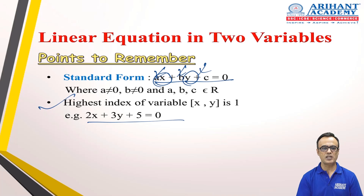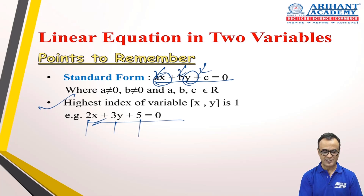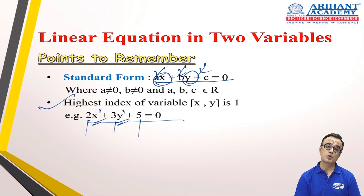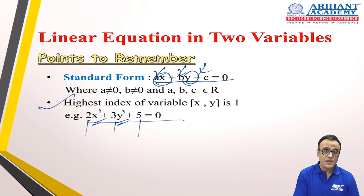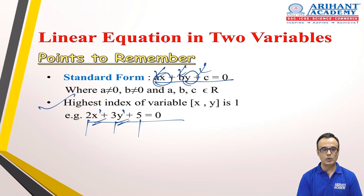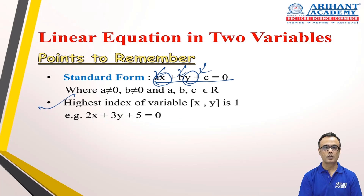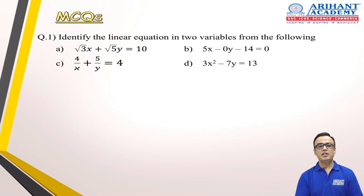In 2x + 3y + 5 = 0, the role of a is played by 2, the role of b is played by 3, and c is 5. Each variable x and y has the highest power 1. You also have quadratic equations, where the highest power is 2. The general format of a linear equation is important because you may come across questions where you need to identify whether a given equation is a linear equation in two variables or not.